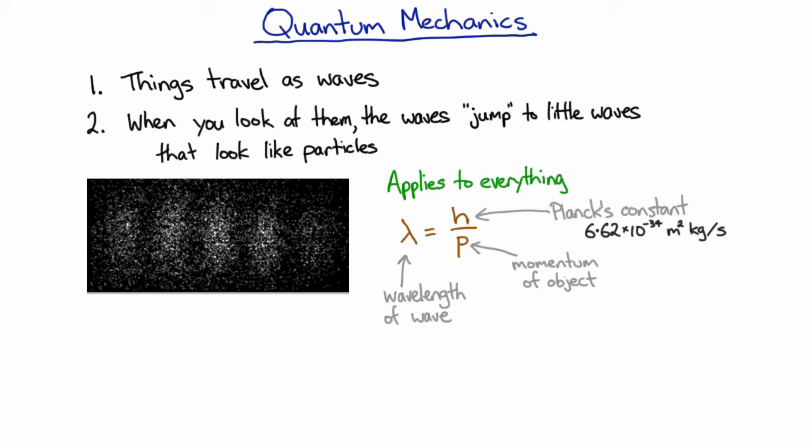And so in order to see an interference pattern, you have to very carefully control everything about your system. And it helps if it's very, very light as well, which is why we can do it fairly easily for photons or for electrons, but it's considerably harder to do for something like a large molecule.